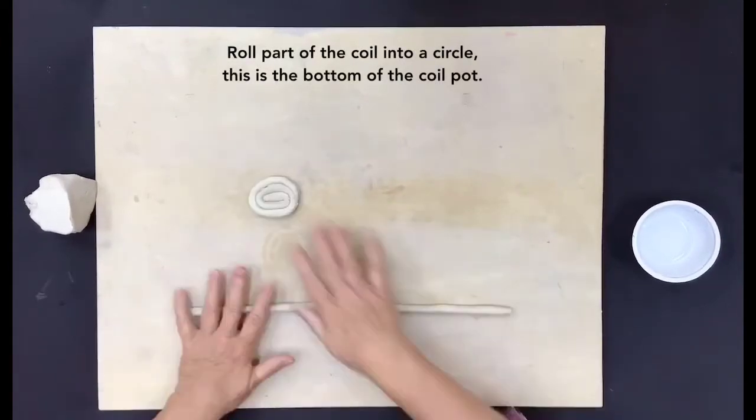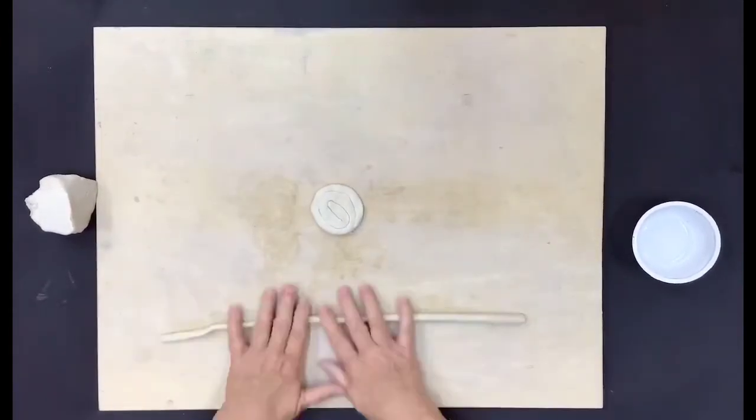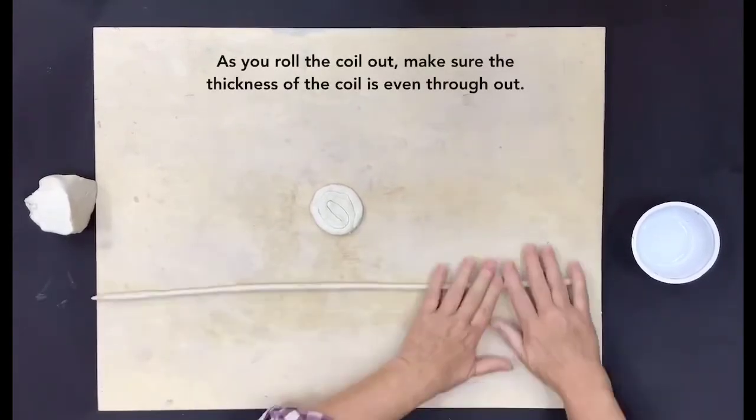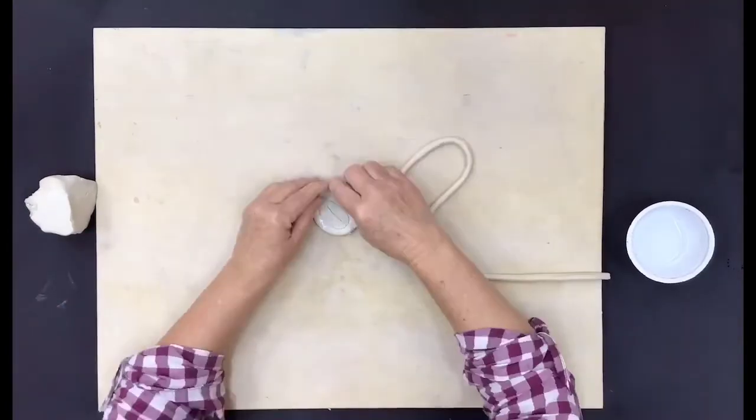Roll part of the coil into a circle. This is the bottom of the coil pot. As you roll the coil out, make sure the thickness of the coil is even throughout.